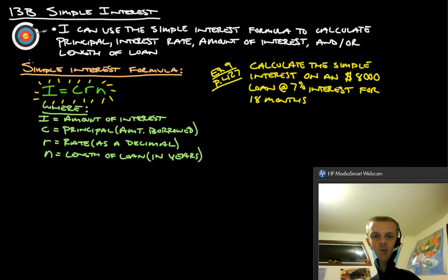Calculate the simple interest on an $8,000 loan at 7% interest for 18 months. Alright? So, I equals CRN, and these are all being multiplied together. Okay? So, we are trying to calculate the interest.